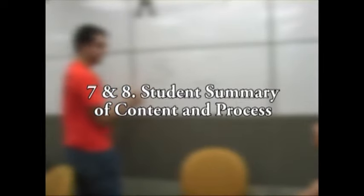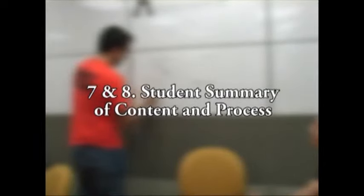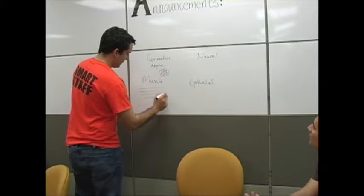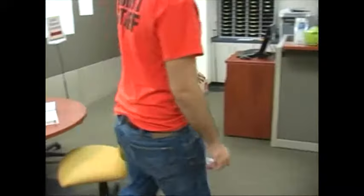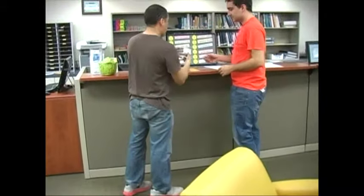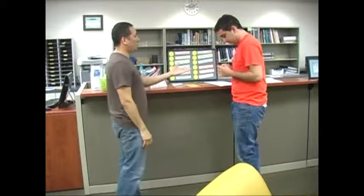Steps 7 and 8: Student summary of content and process. Have the student summarize how the two of you went about solving his or her problem. Step 9: Confirmation. Let the student know if the preceding summaries were correct. Step 10: What's next? Find out if the student needs help with another area or has another question. Step 11: Suggestion for the next session. Always give the student some sort of homework — let the tutee know if he or she should do more practice questions, read the textbook, organize notes, etc., before coming back to tutoring or SI.